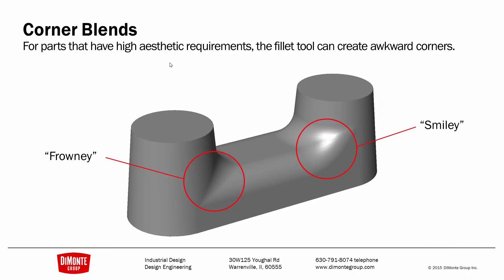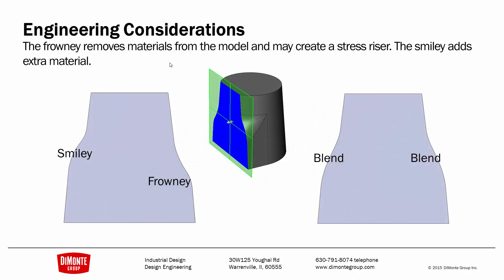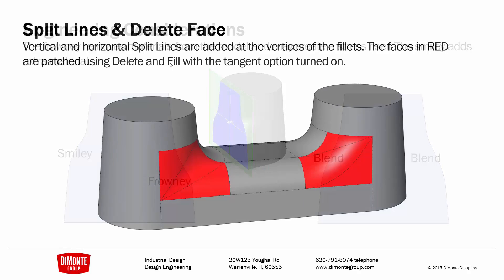For parts that do have high aesthetic requirements, sometimes the fillet tool creates these awkward corners — the smiley and the frowny. One thing to note: if we section through, the smiley is actually adding material to the model where the frowny is removing it. I like to think that the blend between them is Goldilocks — it's just right. So I'll use the Split Line tool to define areas for these blends where I want to remove these awkward fillet intersections.